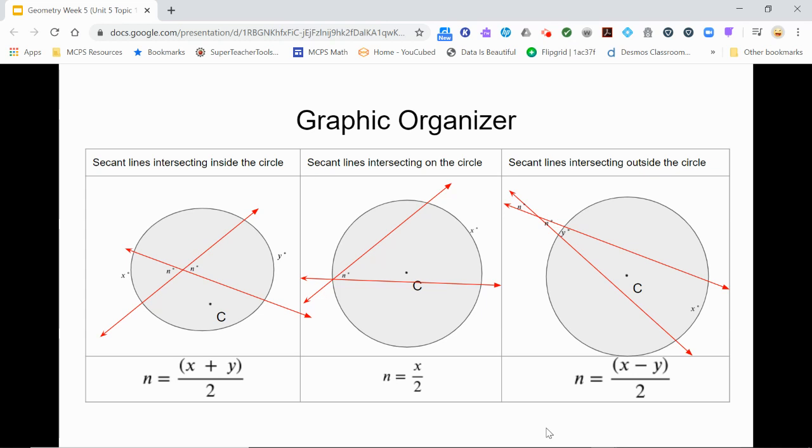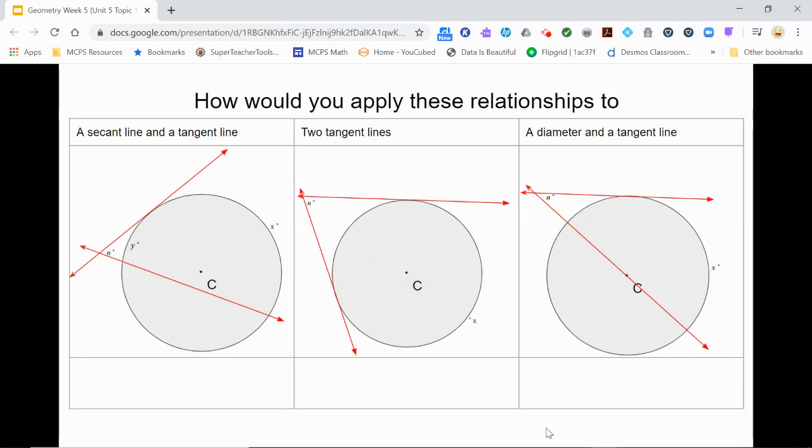Before we move to problems with multiple angles, let's discuss how these relationships present themselves in slightly different circumstances. Here we see the intersection of a secant line and a tangent line, two tangent lines and a diameter and a tangent line.